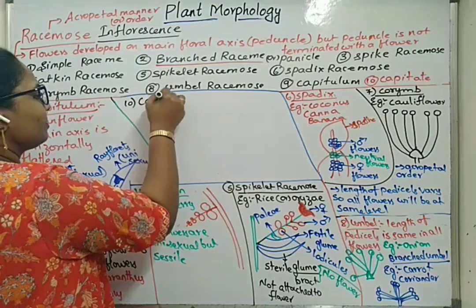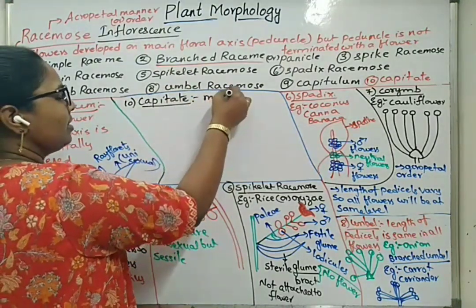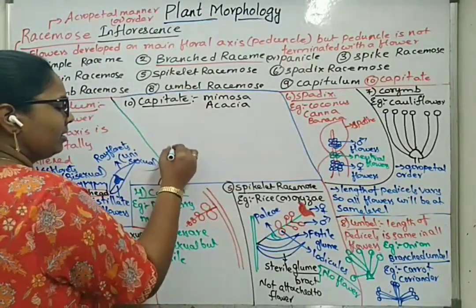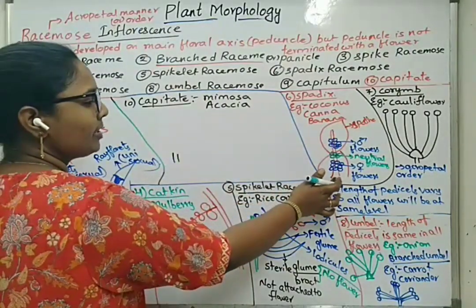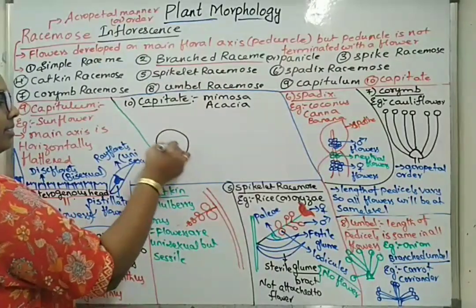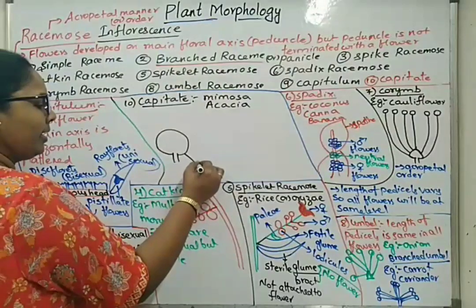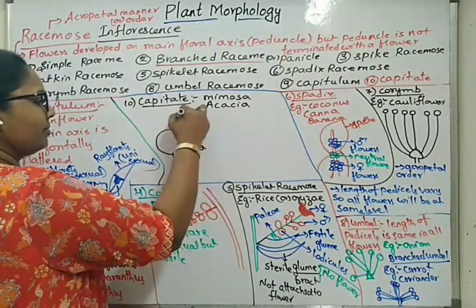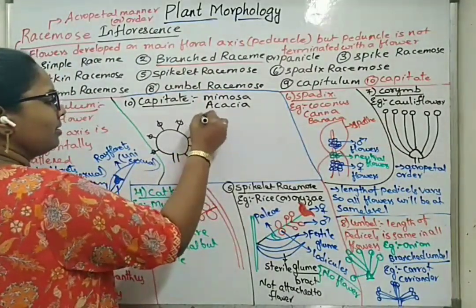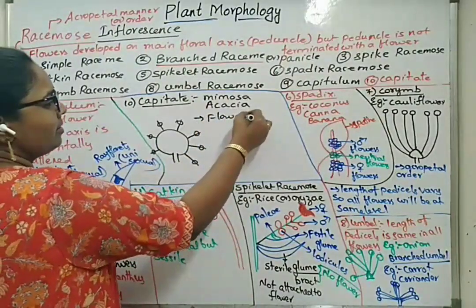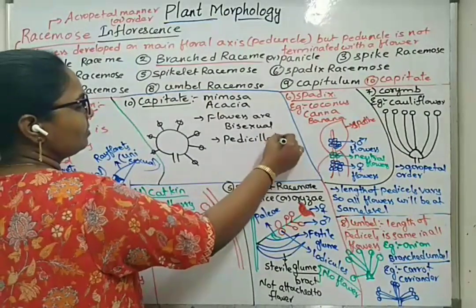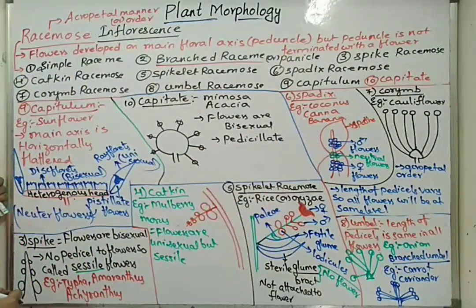Capitate type of inflorescence is seen in case of Mimosa pudica, the touch-me-not plant, and also Acacia. Here there will be one stock holding the total inflorescence. In capitate inflorescence, the peduncle forms a circular head or ball-like structure. Pedicels of the same length arise from it. Flowers are bisexual, and since they have pedicels, flowers are pedicillate. These are the different types of racimose inflorescence.